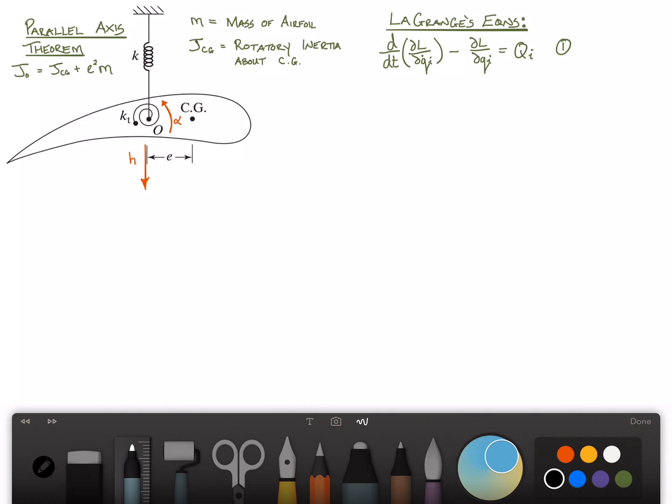So the idea is we have to find the kinetic and potential energy of the system, and then substitute that into Lagrange's equations to get the equations of motion. First of all, we'll look at the potential energy of the system. That's very simple to write. It's just equal to one-half times k times h squared plus one-half the torsional spring k sub t times alpha squared. We'll call that equation two.